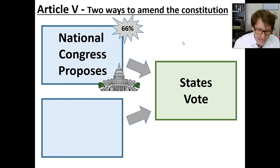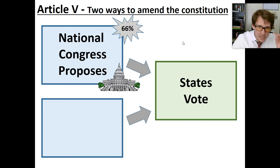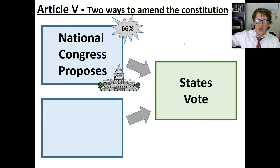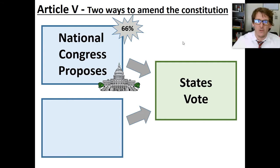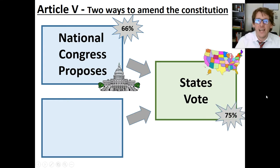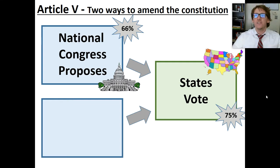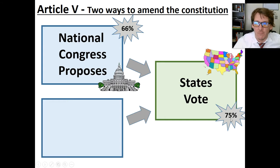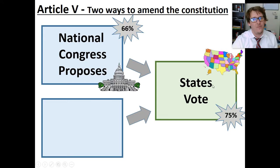Then it goes to the states. Every state has to vote — the government of each and every state gets together and votes. And in that case, you've got to get 75%! We thought 66% was hard. 75% of these 50 states must vote yes. Very difficult to do. Probably never going to happen.